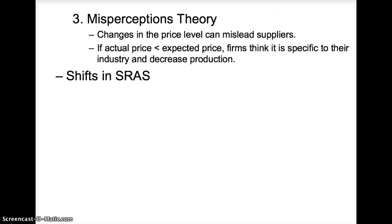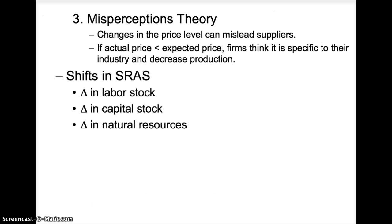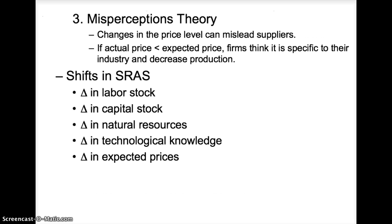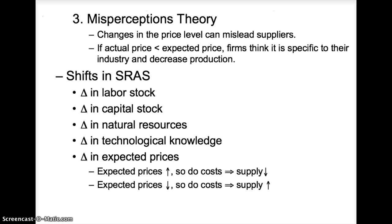The short-run aggregate supply curve does not stay in one spot. The SRAS can shift due to a change in labor stock, capital stock, natural resources, technological change, or a change in expected prices. If expected prices increase, so do costs of production, and the supply curve shifts left. If expected prices fall, so do costs of production, and the supply curve shifts right.